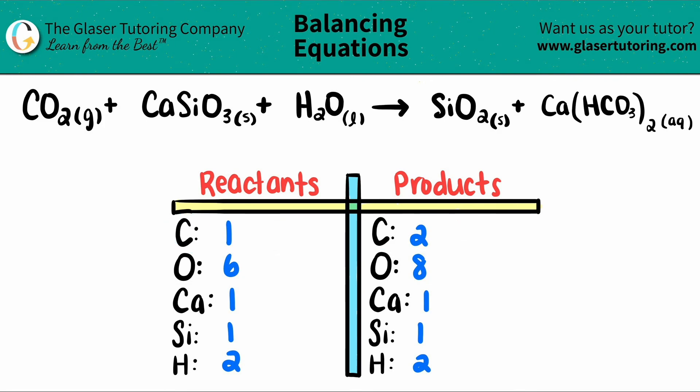One times what will get me to two? You always go from the lower number to the higher number. So one times two will get me to two. And that number that you stated is the coefficient that goes in the front. So I'm going to put a two here.